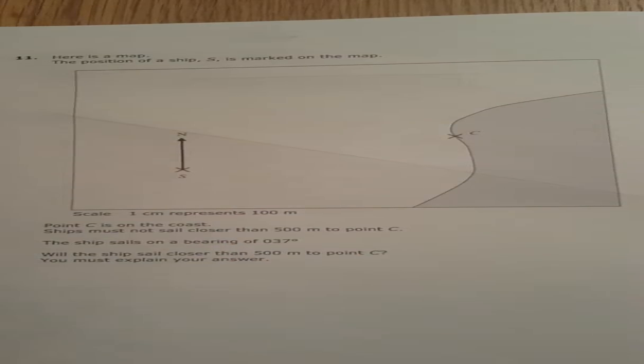Here's a map. Position S is a ship, point C is on the coast. The ship must not sail closer than 500 meters, and it's saying that one centimeter represents 100 meters, so we can use that.